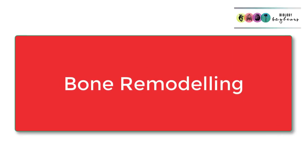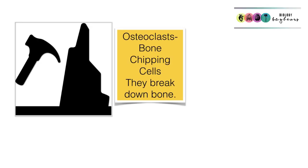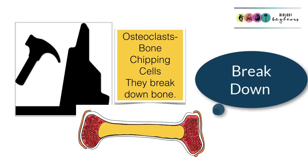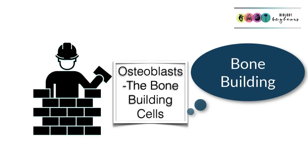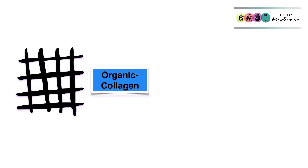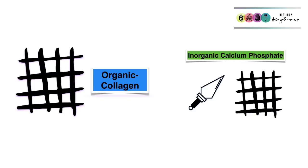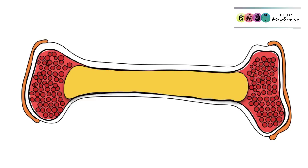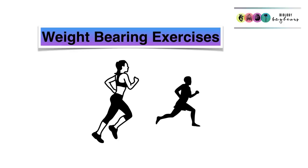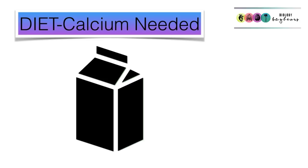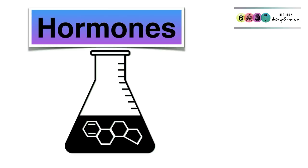Bones will not get any longer but they will be remodeled. Inside the medullary cavity are special cells called osteoclasts — think of C for chipping — whose job is to break down bone on the inside. On the outside, the bone-building cells — the osteoblasts — build up new bone by producing a collagen matrix covered over in calcium phosphate. So your medullary cavity gets wider throughout your life and your bone generally increases in diameter. Weight-bearing exercises are important because they stimulate the osteoblasts. You also need a diet rich in calcium for all the calcium needed for bones, and hormones play a role as well.